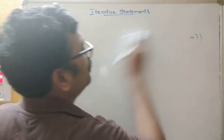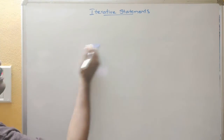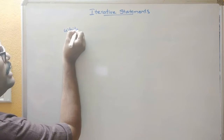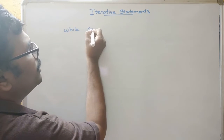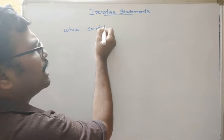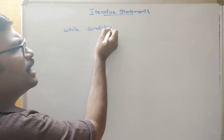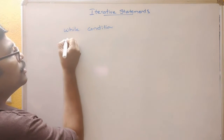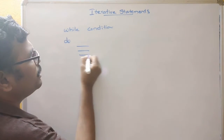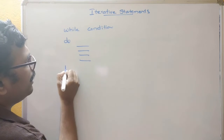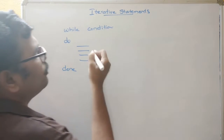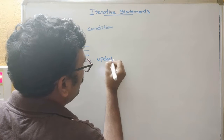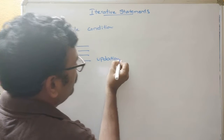For the while loop, write 'while' followed by the condition — which can be either a simple condition or a compound condition — then 'do', followed by the statements, and 'done'. The updation should be done inside the loop body, and the initialization should be done before the while.